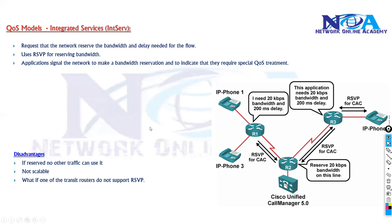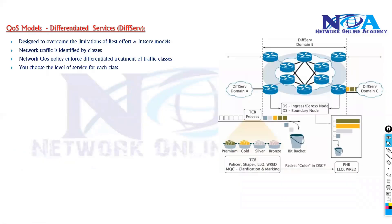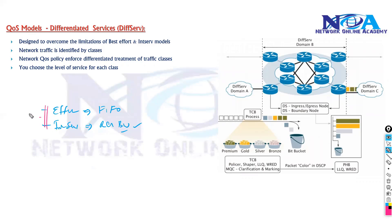In today's networks we use another model called differentiated services. Best effort treats all traffic equally, and integrated services reserves bandwidth — both have significant drawbacks. Differentiated services is designed specifically to overcome the limitations of those two previous models.